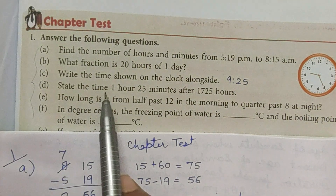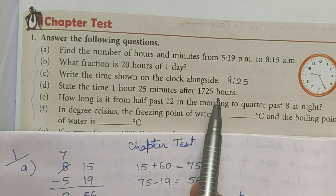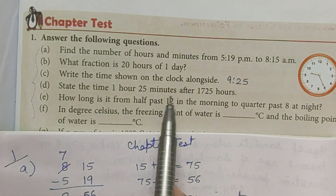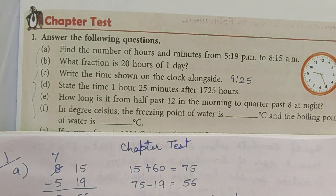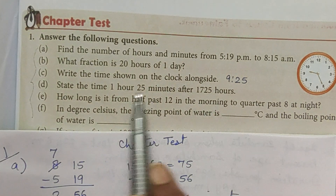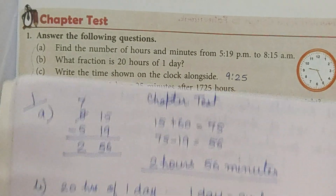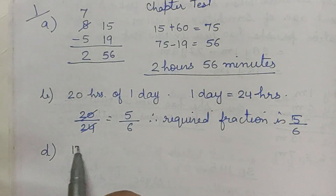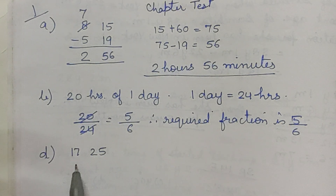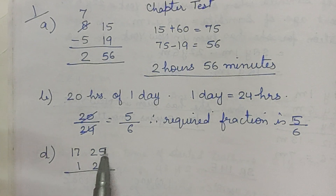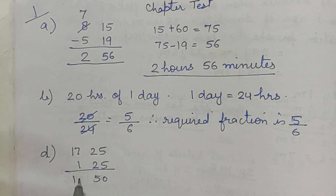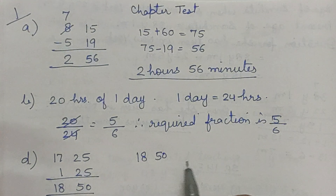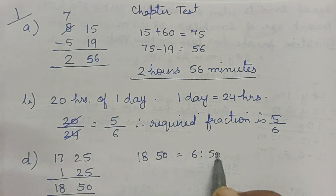D part — state the time one hour 25 minutes after 17:25 hours. 17:25 के one hour 25 minutes के बाद क्या time होगा। इसके लिए 17:25 में add करेंगे 1 hour 25 minutes. 25 plus 25 = 50, 17 plus 1 = 18. So the time is 18:50, or we can say 6:50 PM.